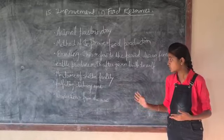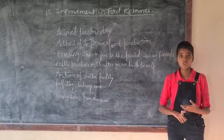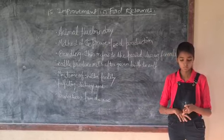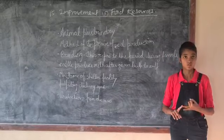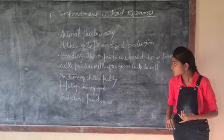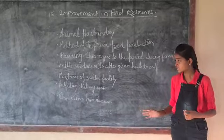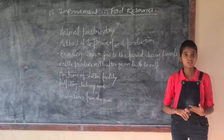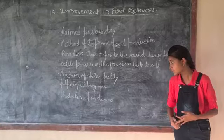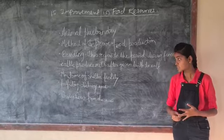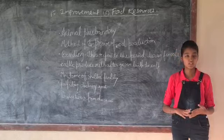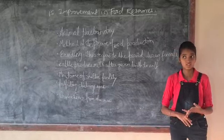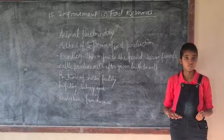Second point, maintenance of the shelter facility: the shelter should be well ventilated with protection from sun, wind, and rain for the animals. Third point, to fulfill the dietary needs, we should give proper food to animals so that they will be healthy. Fourth point, protection from diseases: we should clean the place regularly and brush the cattle so they will be healthy and free from diseases.